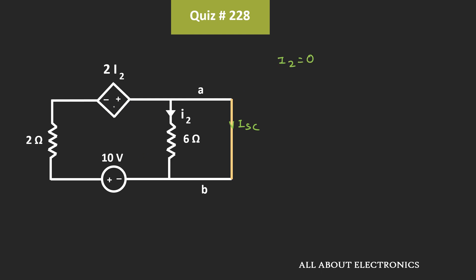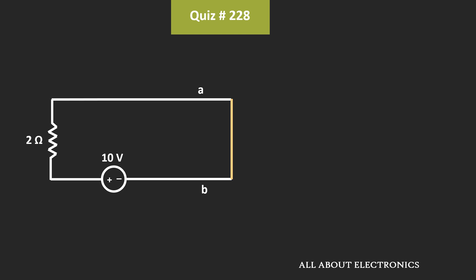Because of that, the dependent source will also become 0. Looking at the equivalent circuit, let's now find the short circuit current by applying the KVL equation. That means 10V is equal to 2 times the short circuit current. Therefore, the short circuit current Isc is equal to 5A.